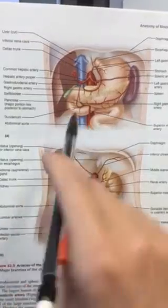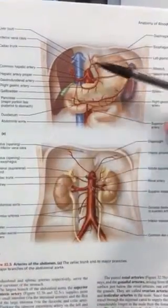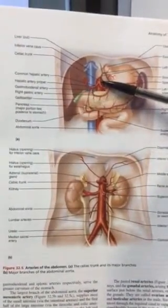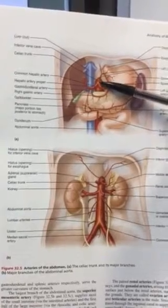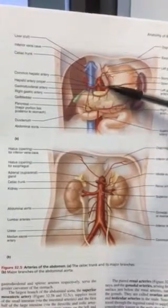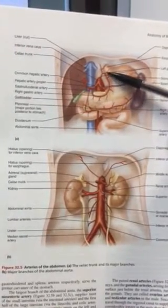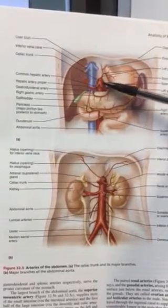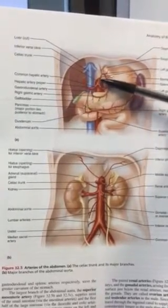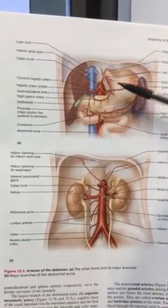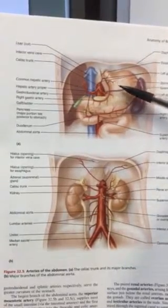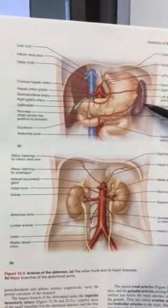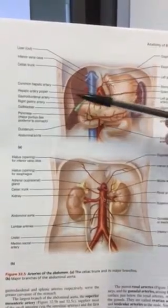The branches off the abdominal aorta, just beneath the diaphragm — the first major branch is the celiac trunk. The celiac trunk will then branch into three branches. You should know the areas that the celiac trunk will be delivering oxygenated blood to, and that would be to the stomach, to the spleen, and to the liver.